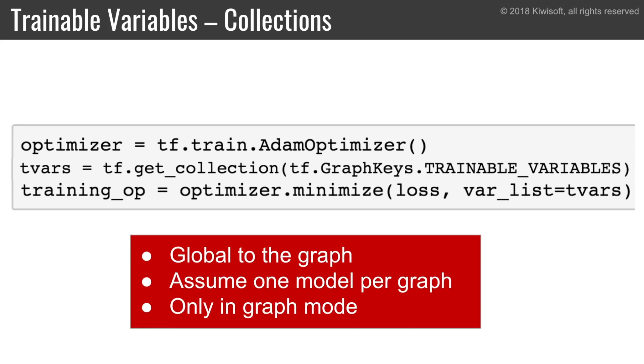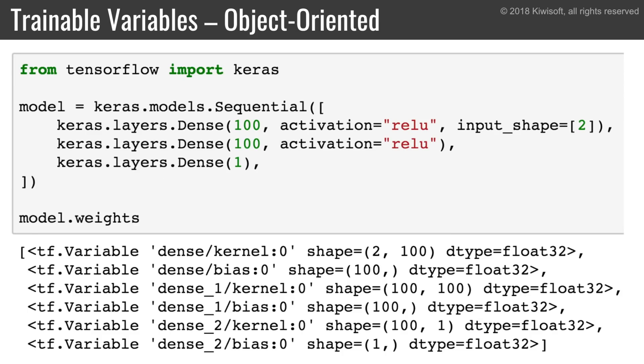The good news is that TensorFlow 2.0 will deprecate collections, so this will lead to cleaner code. For example, if you use tf.keras, each layer handles its own variables, so if you need to get the list of trainable variables, you can just ask each layer, or ask the model that contains the layers.